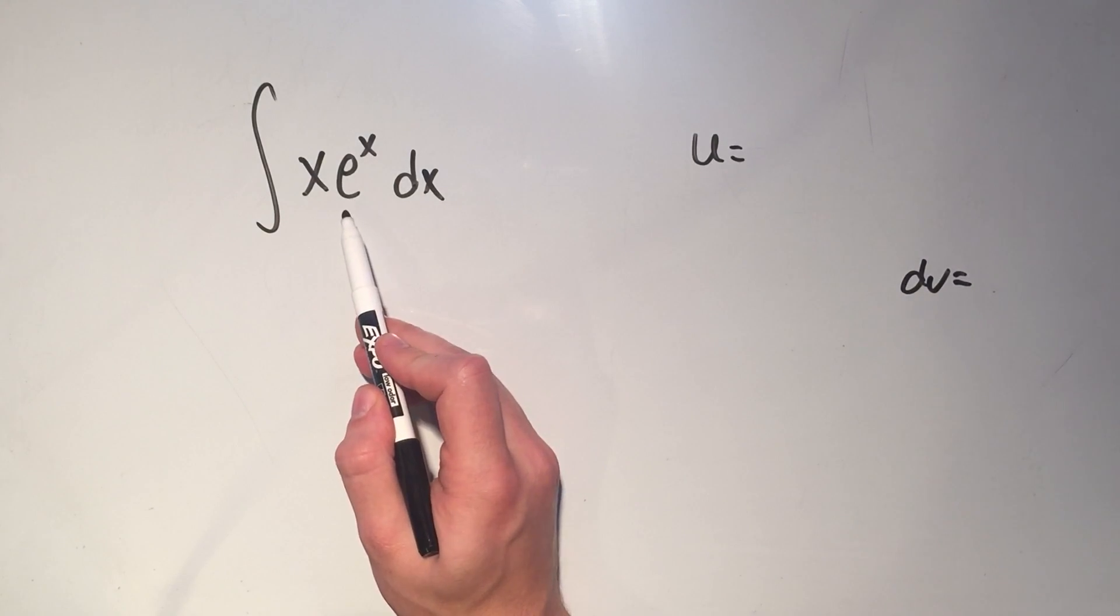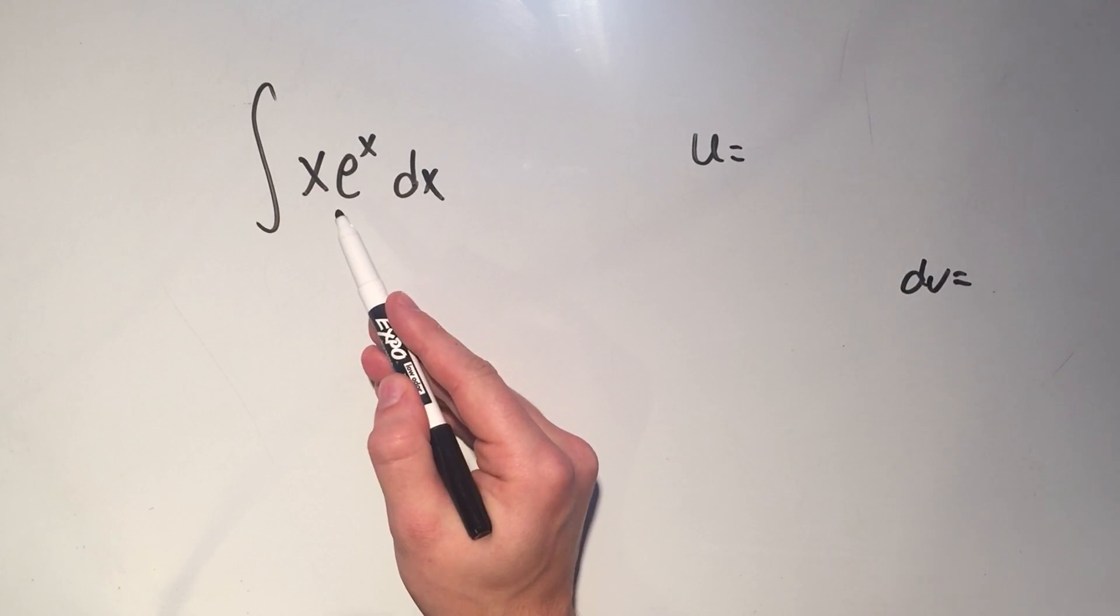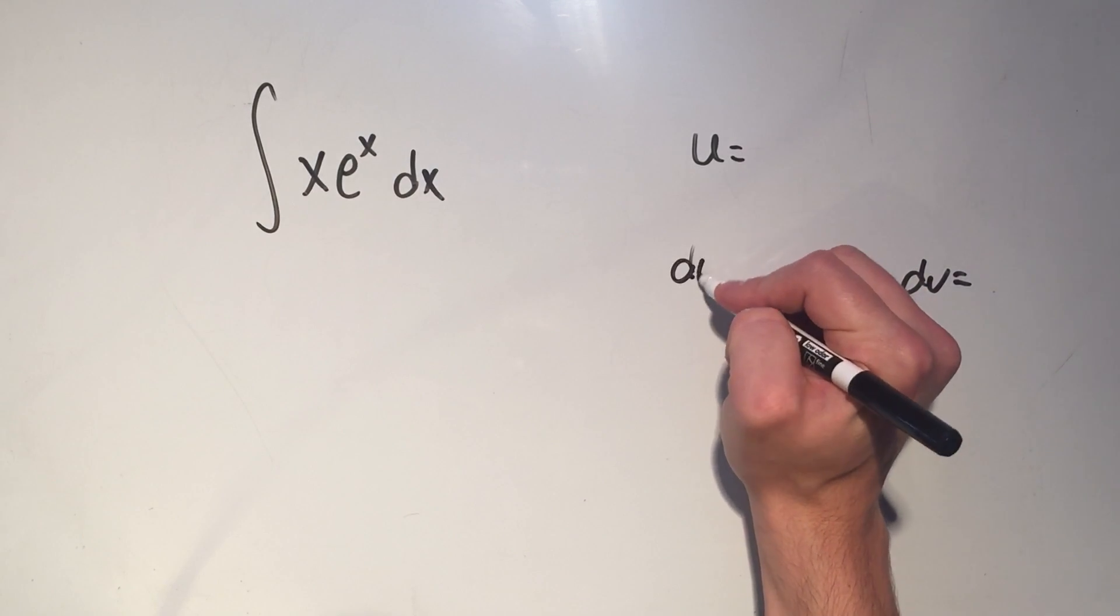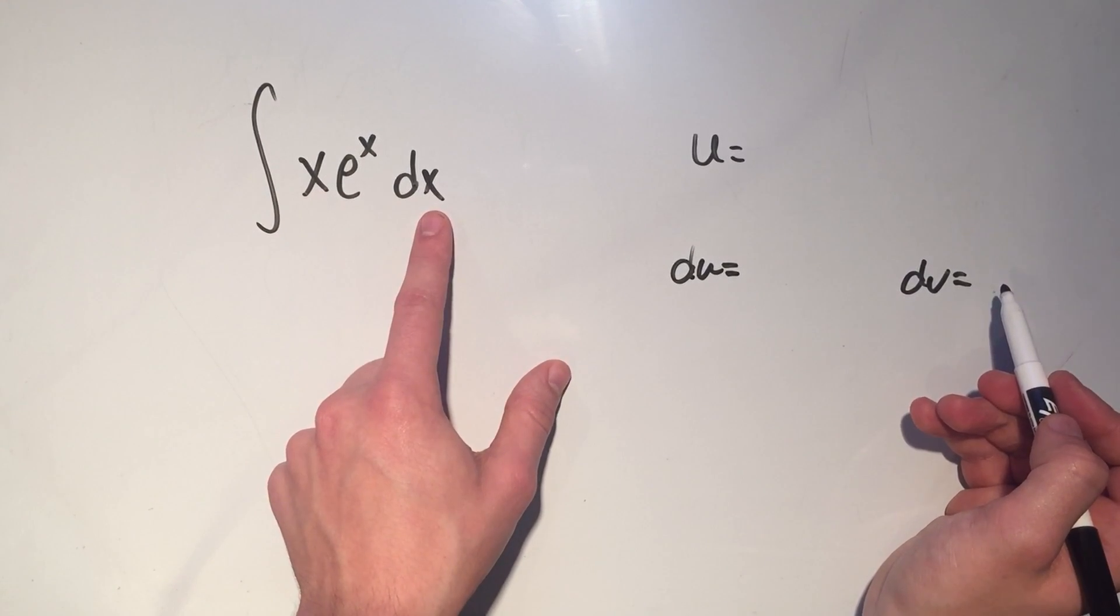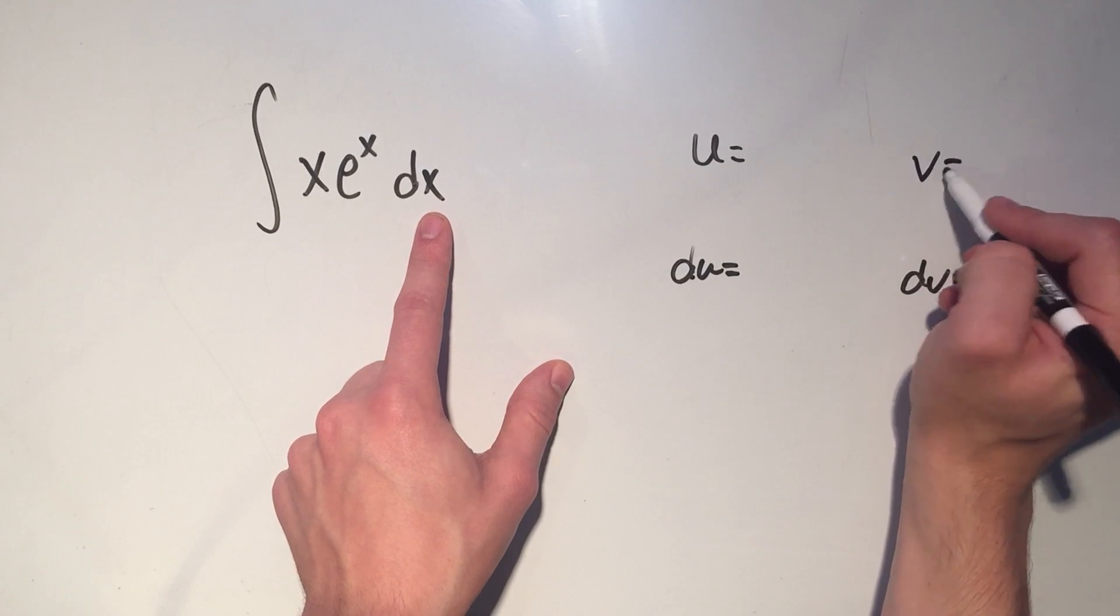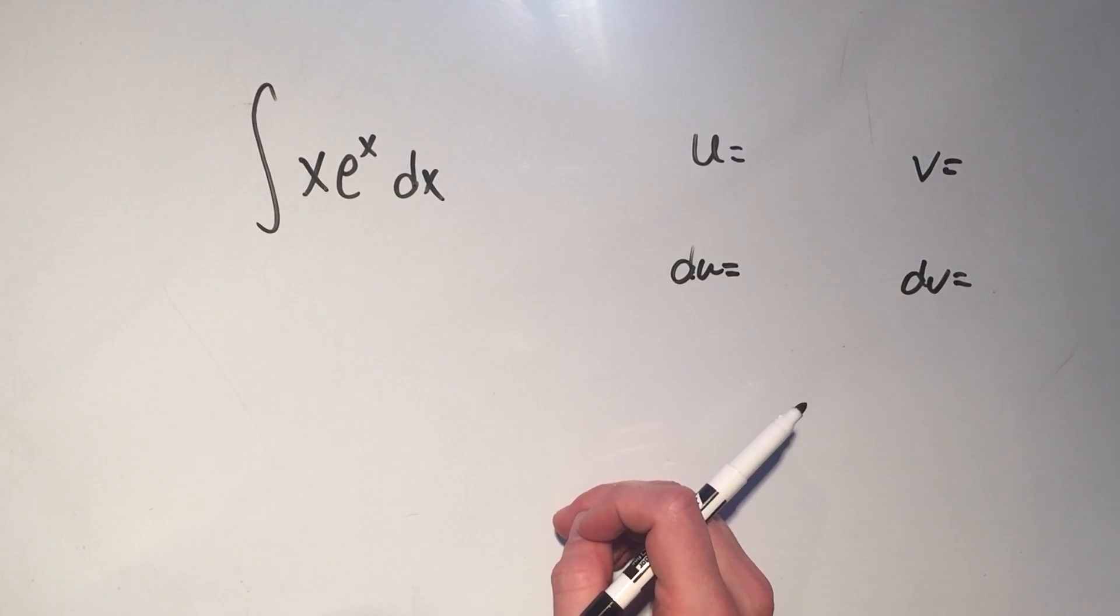So for example, if I picked u to be e to the x, well then du would be e to the x, and that's fine, but that means dv would have to be x dx, and that means my v would be like x squared over 2, and then I'm making my problem more complicated.